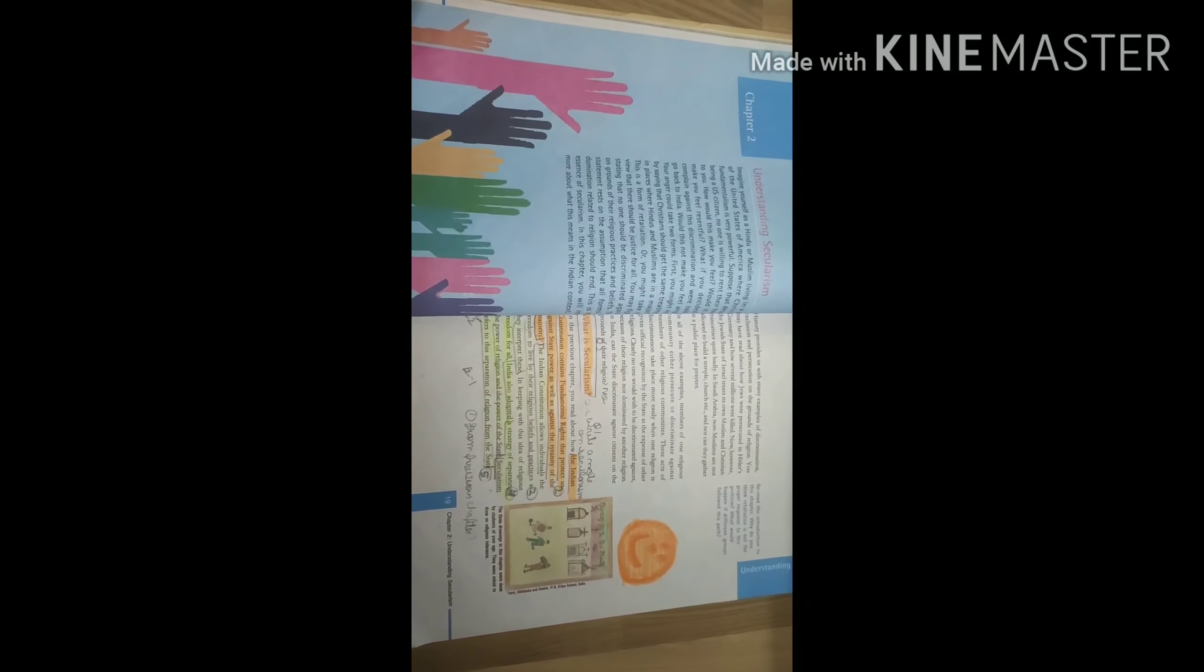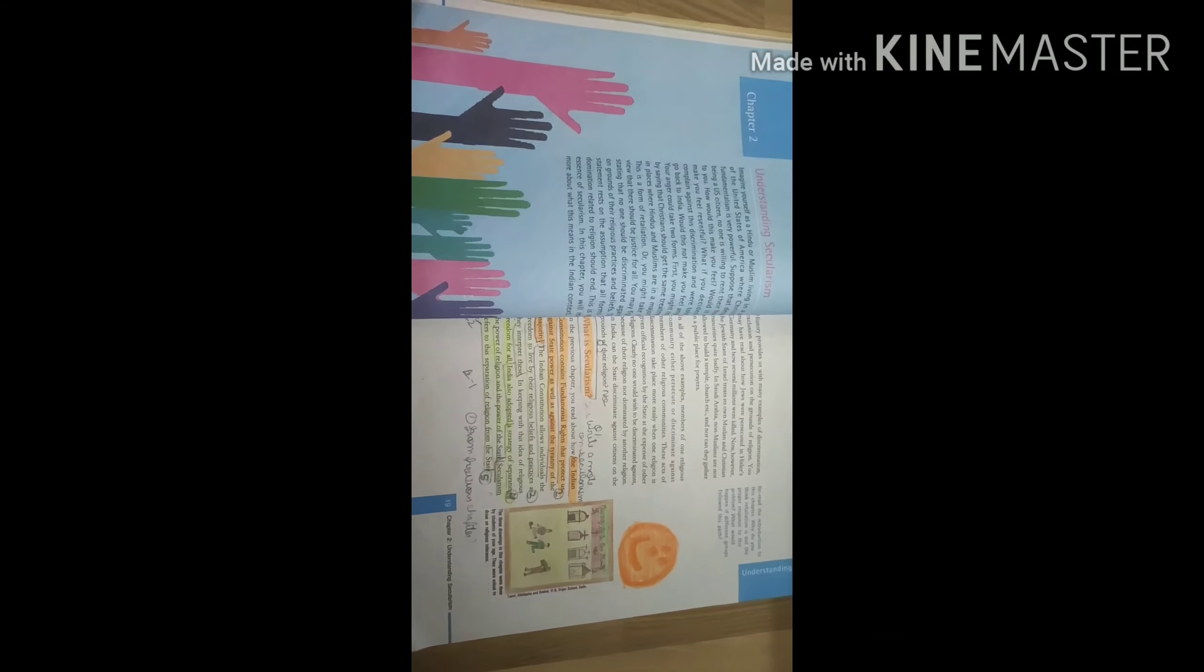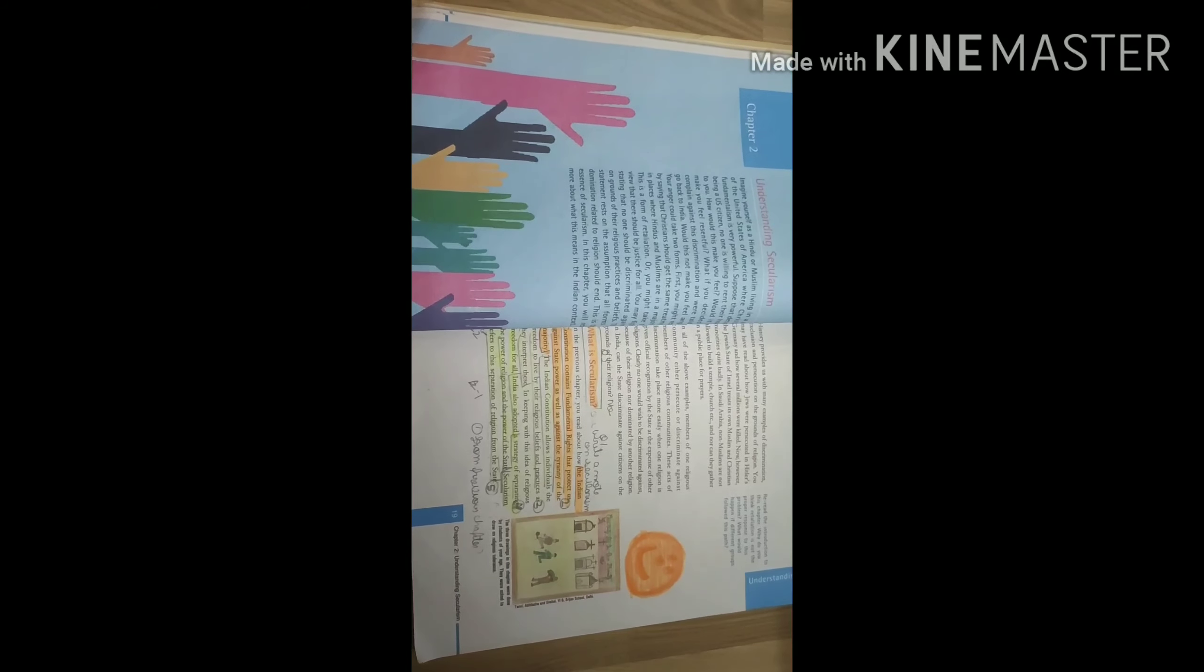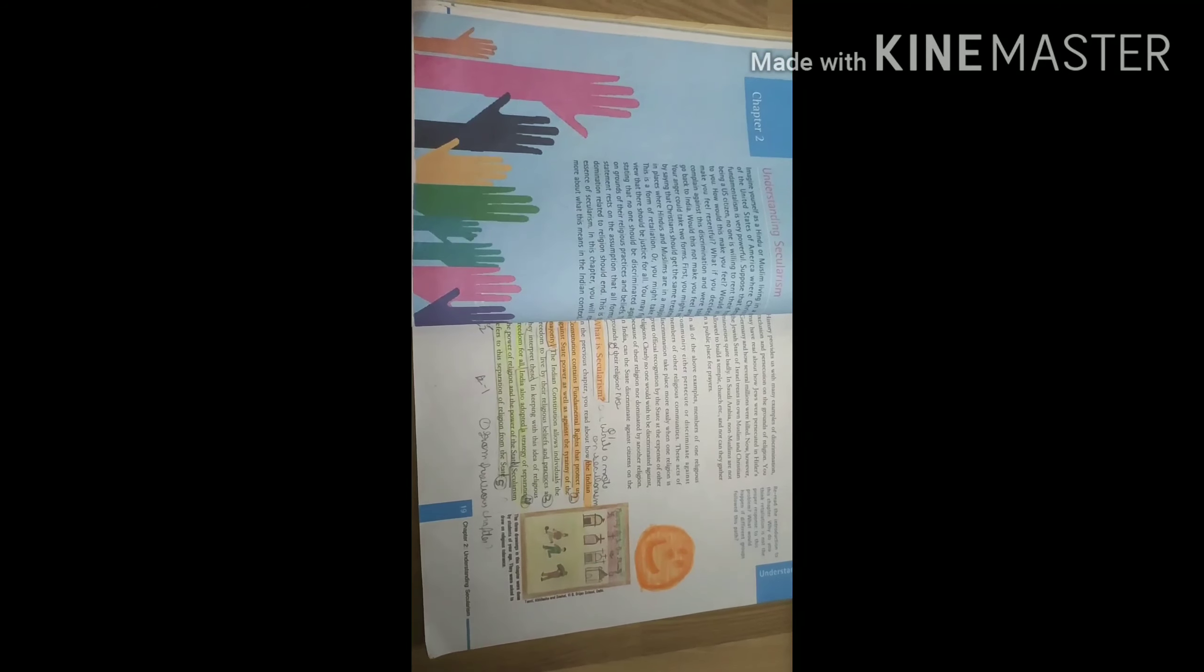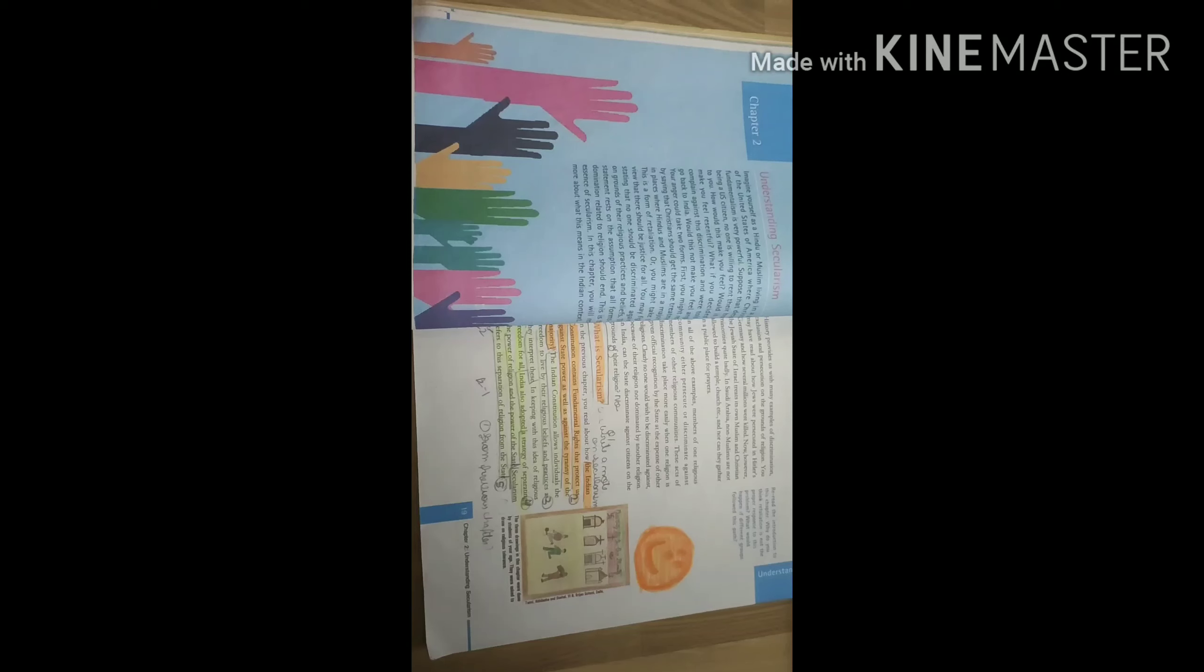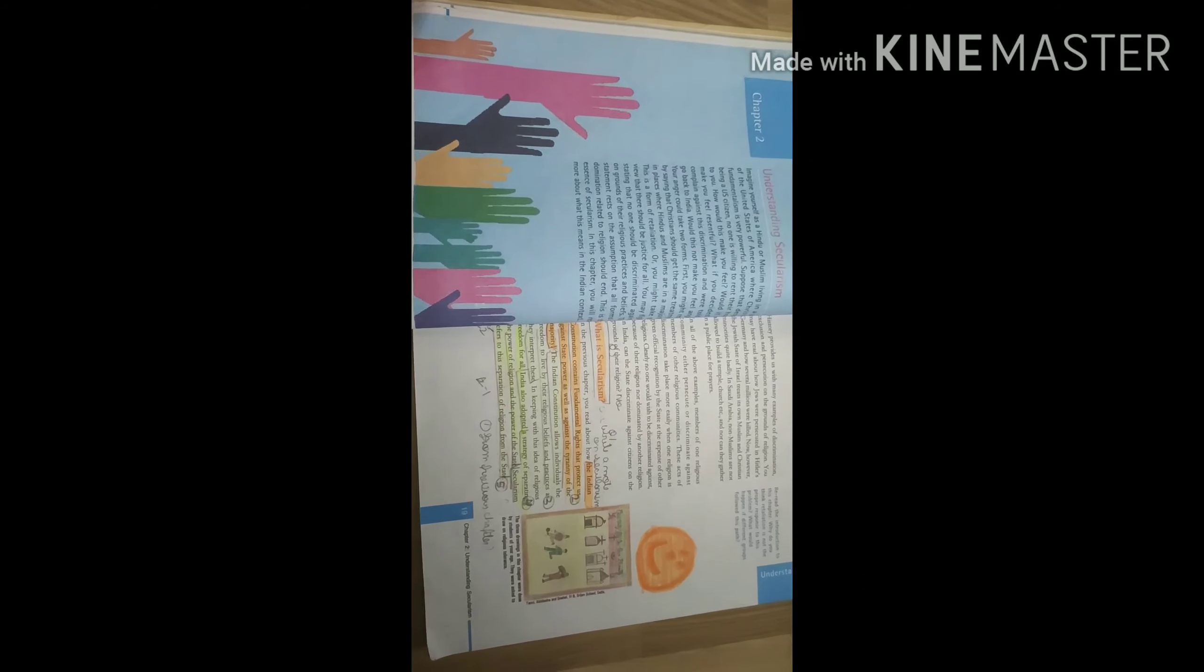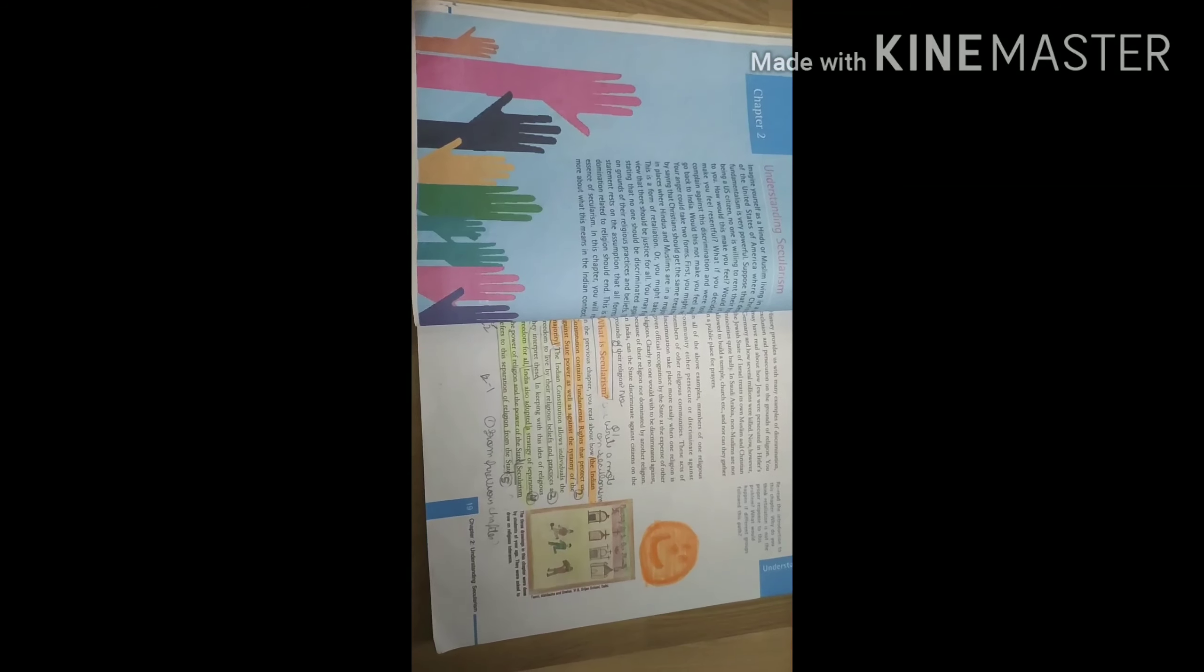The Indian Constitution contains fundamental rights that protect us against the state power as well as against the tyranny of the majority. The Indian Constitution allows the individual to live by their religion, religious beliefs and practices without any interference.